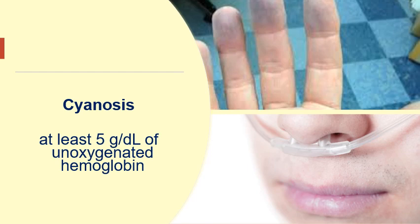We also assess for cyanosis, which is the bluish discoloration of the skin. Cyanosis is evident if at least 5 grams per deciliter of unoxygenated or deoxygenated hemoglobin is present in the body. The average normal hemoglobin is 12 to 16; if at least 5 grams per deciliter is unoxygenated, it results in cyanosis.